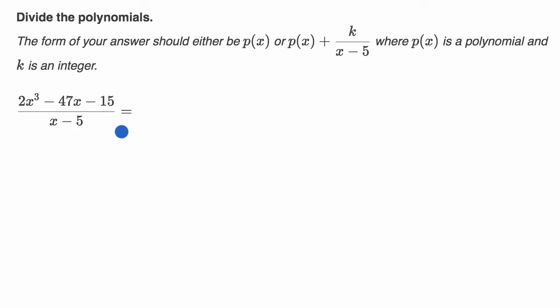In front of us, we have another screenshot from Khan Academy, and I've modified it a little bit so I have a little bit of extra space. It says divide the polynomials. The form of your answer should either be a straight up polynomial or a polynomial plus the remainder over x minus five, which we have here in the denominator, where p of x is a polynomial and k is an integer.